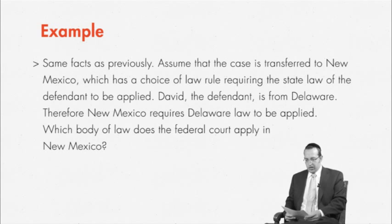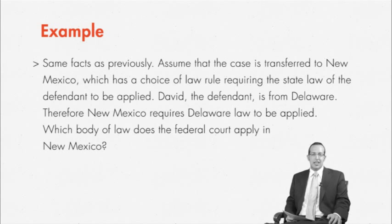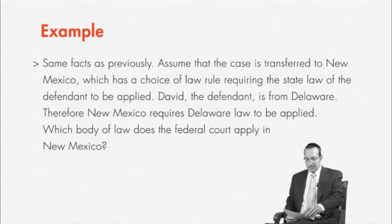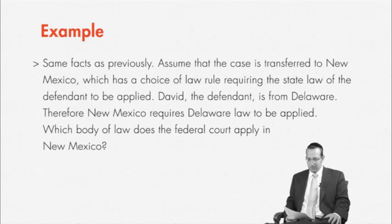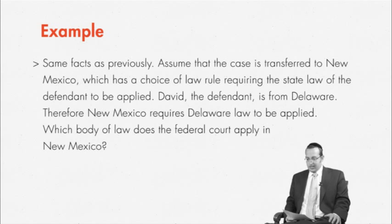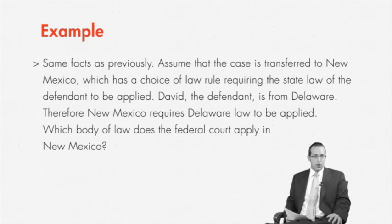Now imagine that New Mexico has a rather odd choice of law rule that says in negligence cases you always apply the state law of the defendant. Probably no state in the union has that law, but for the sake of our fact pattern, let's assume those are the rules. If you get such a strange choice of law rule on your exam, don't fight the question — just assume those are the choice of law rules. David is from Delaware, so New Mexico's choice of law rules say to use Delaware law. But Delaware's choice of law rules state that you should use New Mexico law. So: New Mexico says use Delaware law, Delaware says use New Mexico law. Which body of law should the federal court now in New Mexico apply?